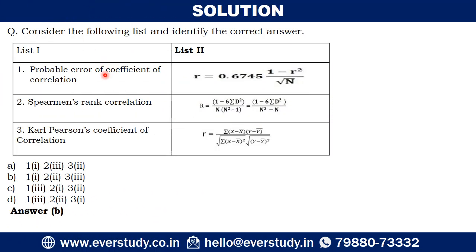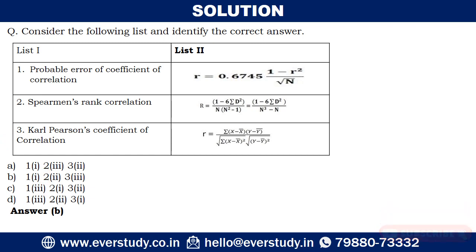The formula for probable error of correlation is: PE = 0.6745 × (1 − r²) ÷ √N. Spearman's rank correlation formula is: r = 1 − (6ΣD²) ÷ (N³ − N). Karl Pearson's coefficient of correlation formula is: r = Σ(x − x̄)(y − ȳ) ÷ √[Σ(x − x̄)² × Σ(y − ȳ)²]. Please review this question carefully as this type is commonly asked.